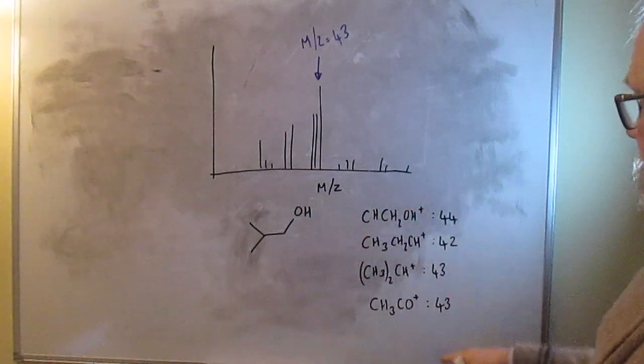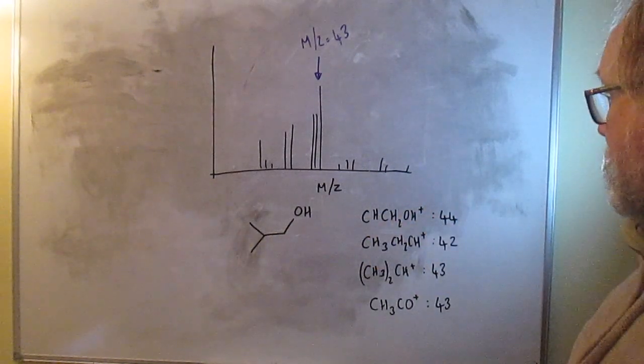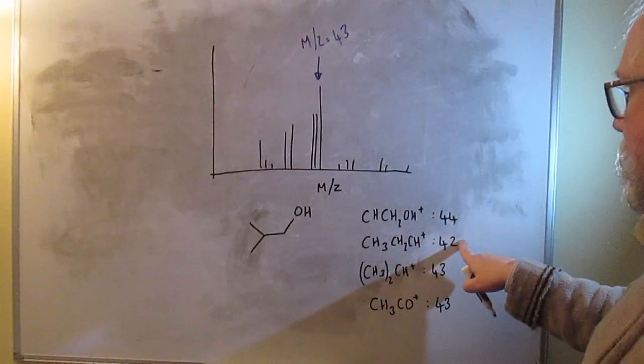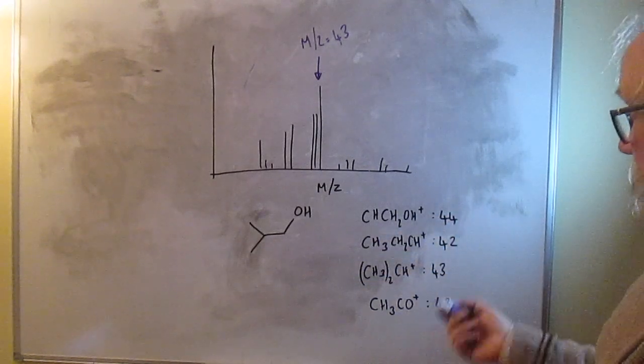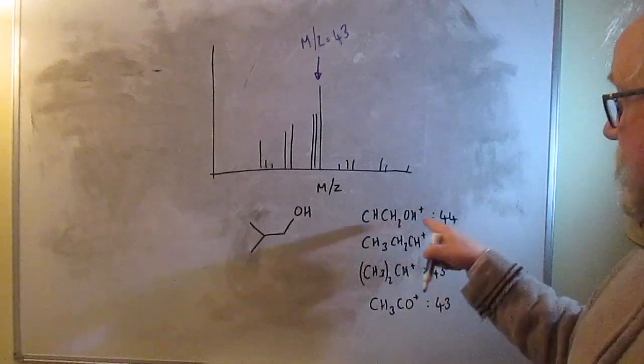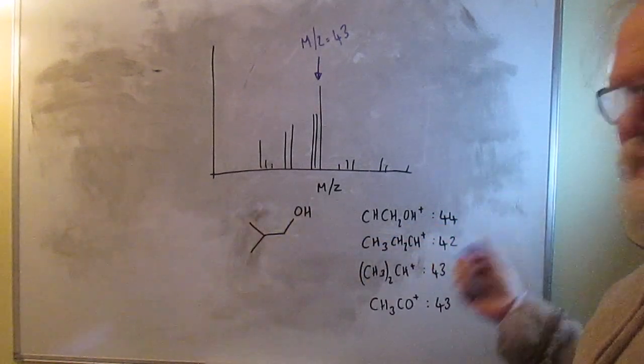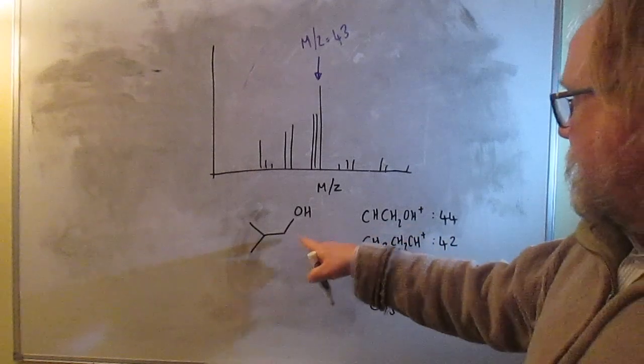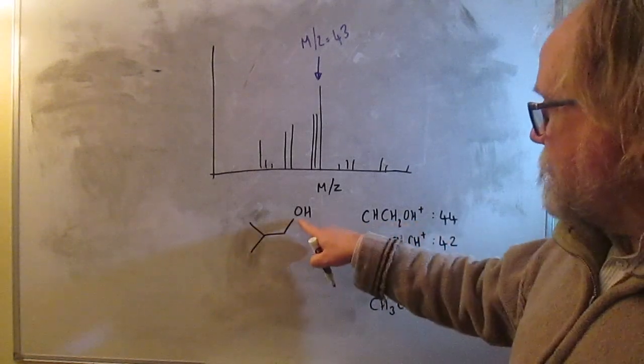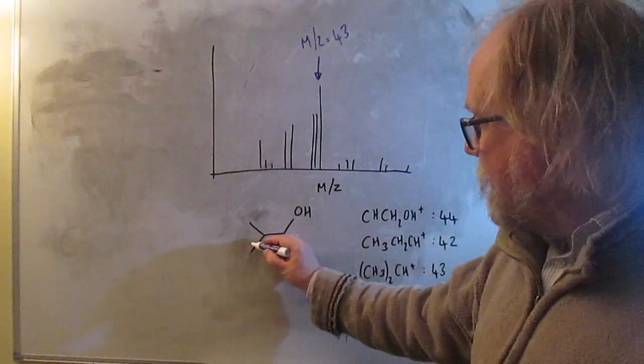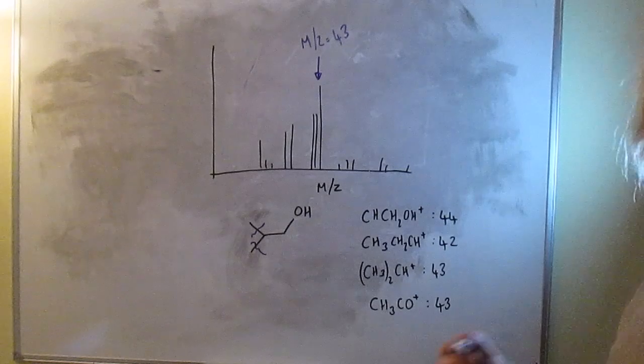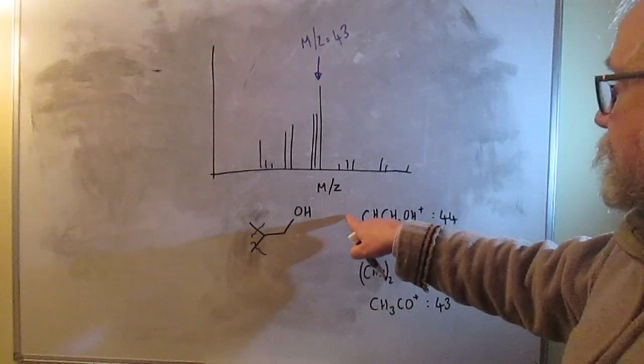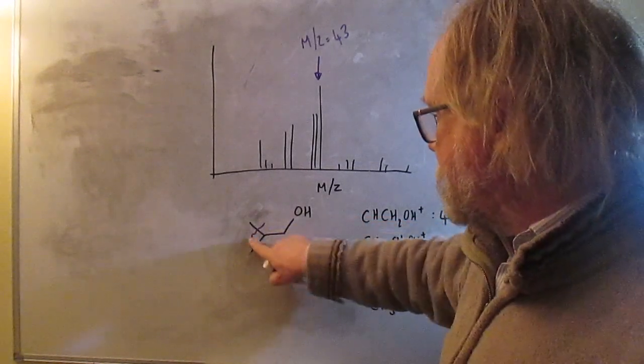So one way to approach this question is just to quickly scan down these and add up the relative masses. So this one comes to 44, that one comes to 42. So it couldn't be either of those. The other way you could quickly eliminate both of those is that you couldn't get them from that molecule. Because you can see that in order to get that fragment, CHCH2OH+, that's the CH2, that would be the CH, but you'd have to break that bond and that one. So you'd have to break two bonds, and we know that's not a likely process, so it's not going to give the most intense fragment. So you could rule that one out anyway, but it has the wrong mass, so it's definitely not that one.